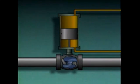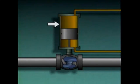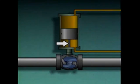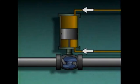A double-acting hydraulic actuator is called double-acting because it uses hydraulic fluid pressure to both open and close a valve. It consists of a cylinder, a fluid port at the base, a second fluid port at the top, a piston, and a piston rod connected to the valve disc. Fluid can enter the cylinder through either of the two ports to move the piston up or down.